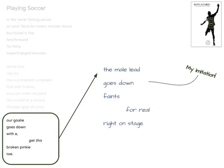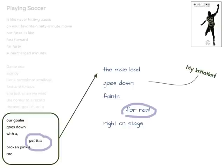For the last stanza, the mentor text reads: 'Our goalie goes down with a — get this — broken pinky toe.' My imitation is: 'The male lead goes down, faints, for real, right on stage.' I like how the lines break up this moment. The phrase 'get this' feels like the speaker, Nick, is turning just to talk to you. And I tried to imitate that with the phrase 'for real.' The male lead really did faint on stage — I wrote about it in my free write, and I can see my next poem being about this awkward moment.